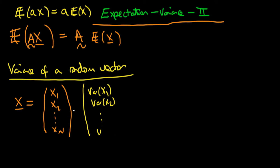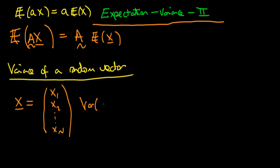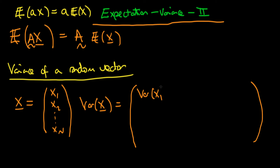So we don't define the variance of a random vector as a vector — we define it as a matrix. The variance of a random vector x is what we call the variance-covariance matrix. The diagonal elements are just the variance of each element of the random vector: variance of x1 in the top left, then variance of x2, continuing all the way to the variance of xn at the bottom.